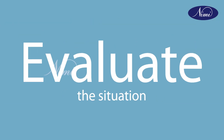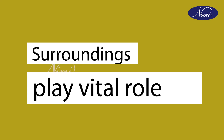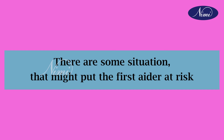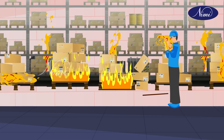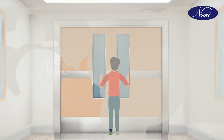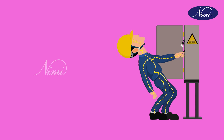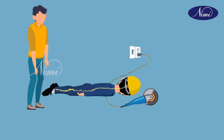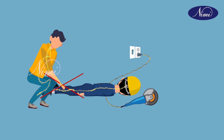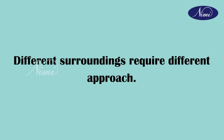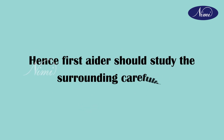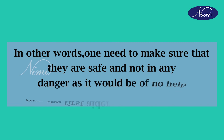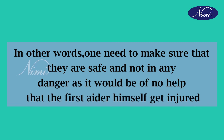Evaluate the situation: surroundings play a vital role. There are some situations that might put the first aider at risk. When faced with accidents like fire, toxic smoke, gases, an unstable building, live electrical wires, or other dangerous scenarios, the first aider should be very careful not to rush into a situation which may prove to be fatal. Different surroundings require different approaches. Hence, the first aider should study the surrounding carefully. One needs to make sure that they are safe and not in any danger, as it would be of no help if the first aider himself gets injured.